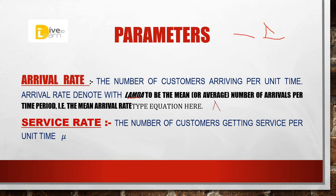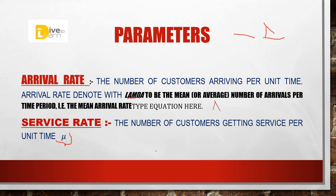[Hindi/Urdu] The next parameter is service rate. Just as arrival rate means how many customers arrive at the bank in one hour, service rate is how many persons the bank is serving in that particular time — the number of customers getting service per unit time. For example, if the bank is serving 50 persons in one hour, then that is the service rate. Service rate is denoted by the symbol mu (μ). So mu (μ) denotes how many customers are getting service from the bank at a time per unit.